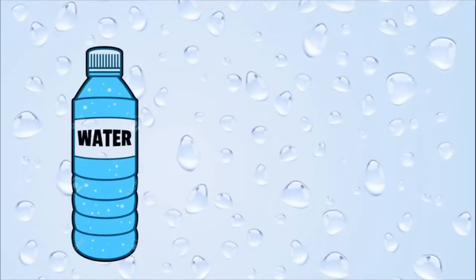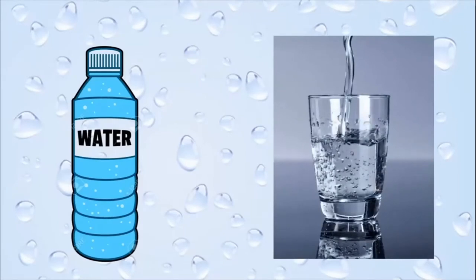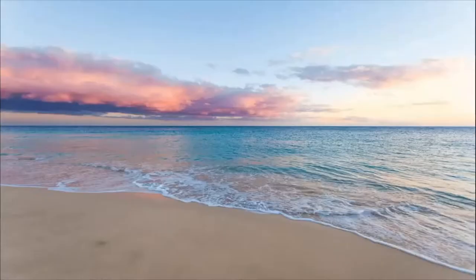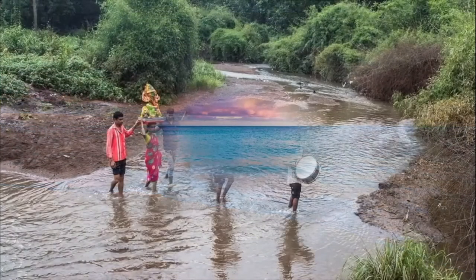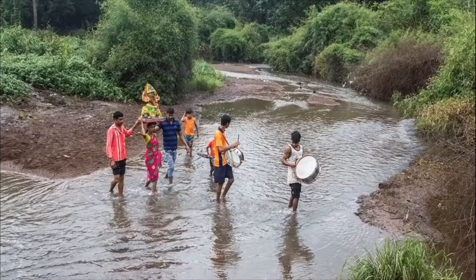Whenever you think about water, children, we always think about water in a bottle — our mummy fills up water in a bottle and keeps it in the fridge. We also think about water in a glass. Some of us who have gone to beaches might think about the sea, or if you're living in a village, you might think about the river. So we always think about water on the outside: a bottle, a glass, water from a tap, in a bucket, in the sea, in a river, rain water, etc.